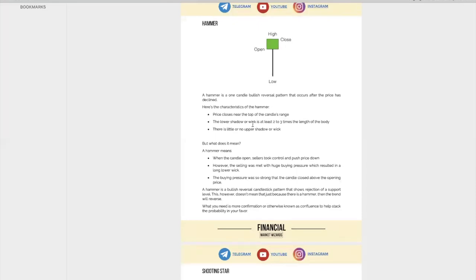The first pattern is the hammer. The hammer is basically a one-candle bullish reversal pattern. It's this shape — it happens after price has declined. Price is going down, you have a hammer, and then price reverses after that. Some characteristics of the hammer include: price closes near the top of the candlestick. The entire candle range — when you see a candle like this, if it closes like this, it means it closed at the top.